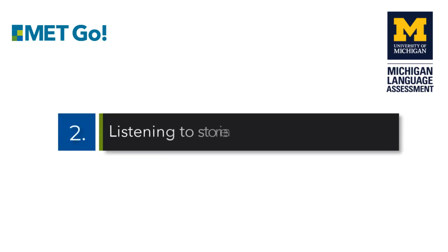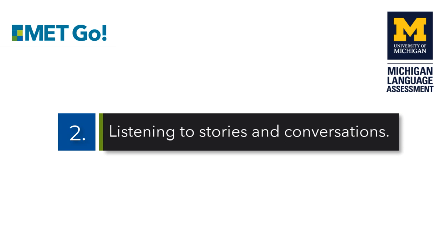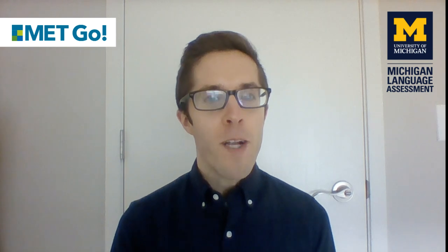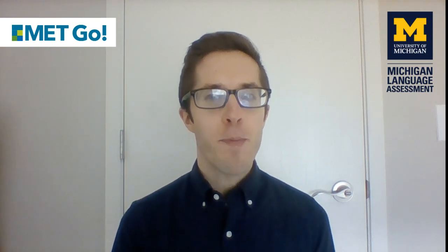Our second tip is listening to stories and conversations. In this activity, students will create dialogues or monologues and then act them out in front of the class. First, you'll want to generate as many situations as you can, with your students' help if possible. Write those situations down on a whiteboard, either a real one in class or a virtual one if you're teaching online. Review the situations as a class, then pair each of your students and ask each pair to pick one situation.